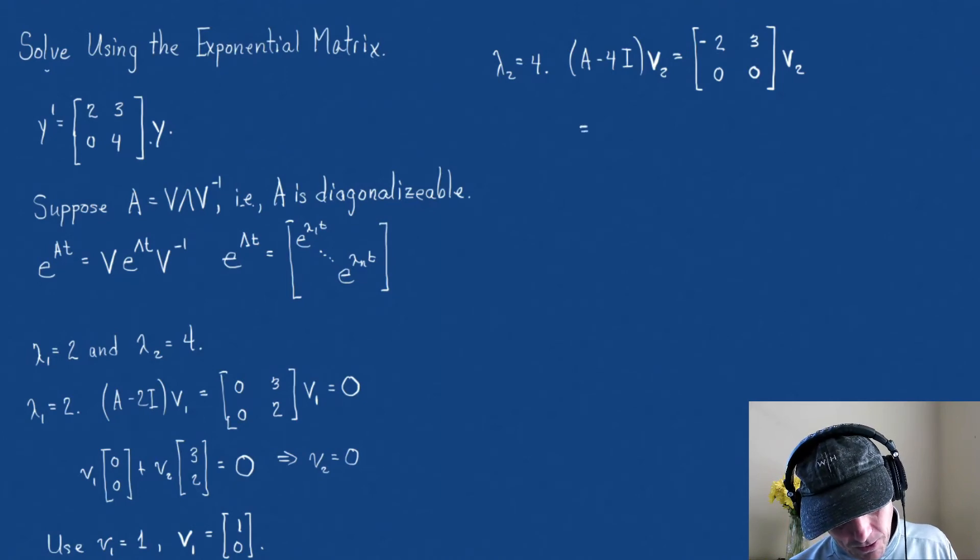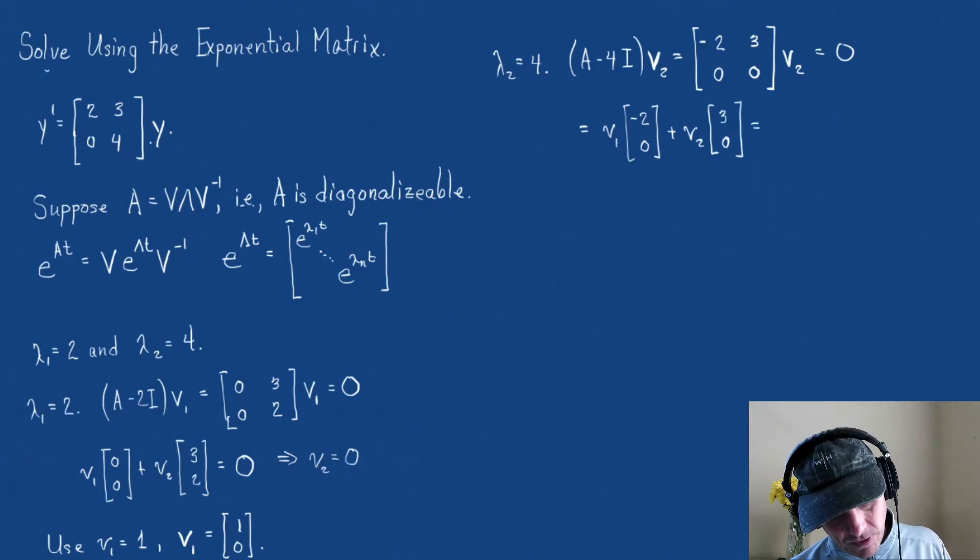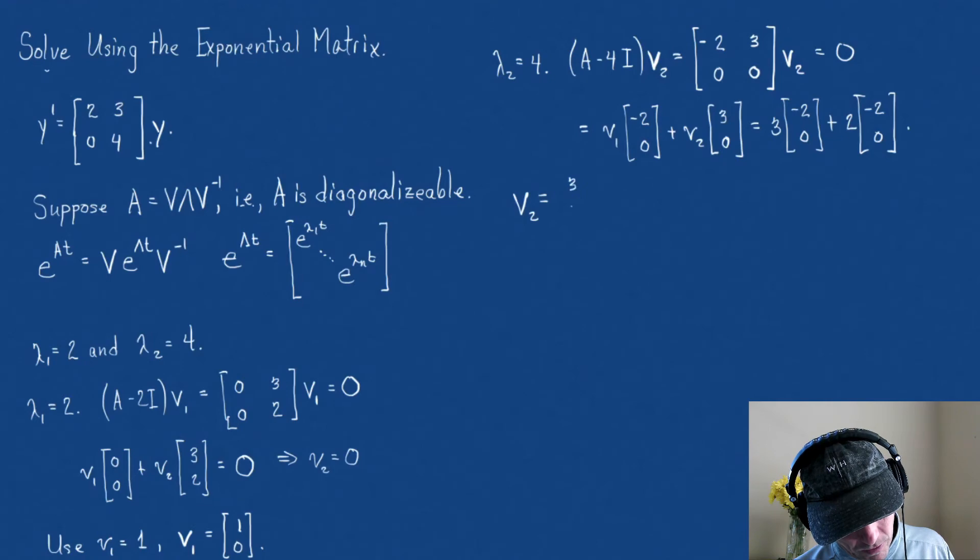this has to equal 0, but that's the same as saying some V1, minus 2, 0, plus V2, another scalar, times 3, 0. How do we get to 0? I think we can do this most effectively if we use 3 times the first vector, minus 2, 0, plus 2 times the second vector, minus 2, 0, and that works. So, there we go, but V2, the second eigenvector, is 3, 2.